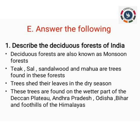You will have more space below, so write part E — answer the following — and the first question: describe the deciduous forests of India. Here we have four points. First point: deciduous forests are also known as monsoon forests. Second point: teak, sal, sandalwood, and mahua are trees found in these forests. Third point: trees shed their leaves in the dry season.